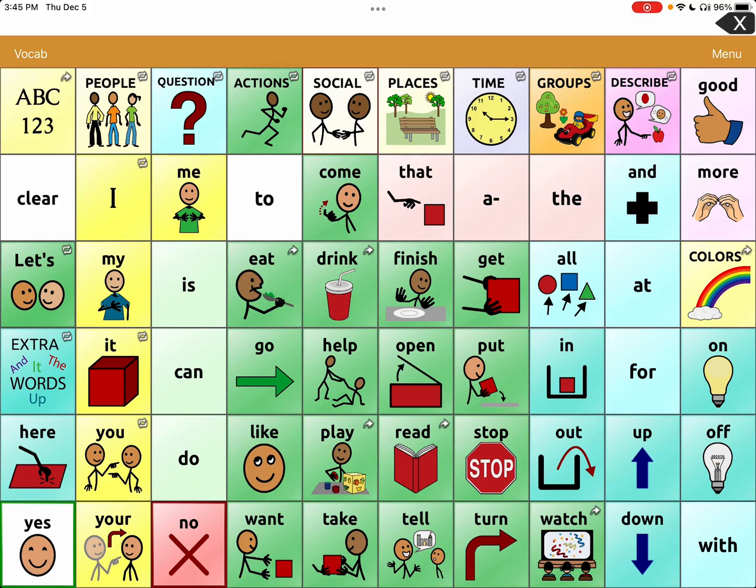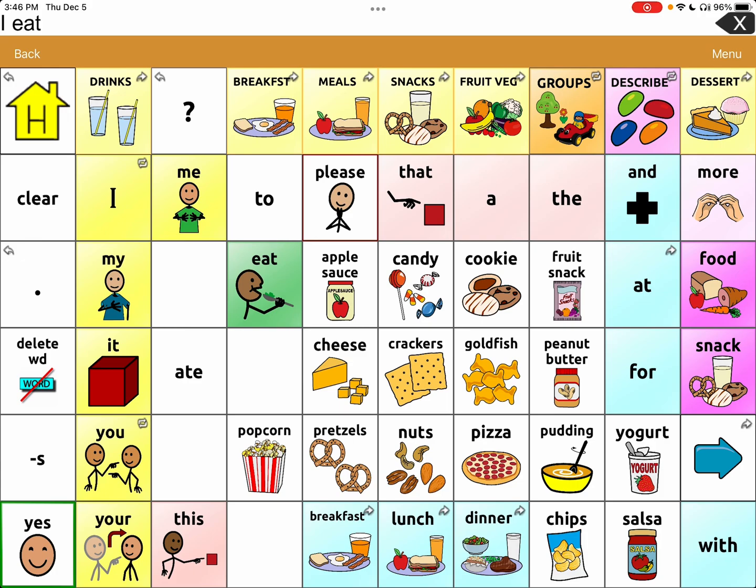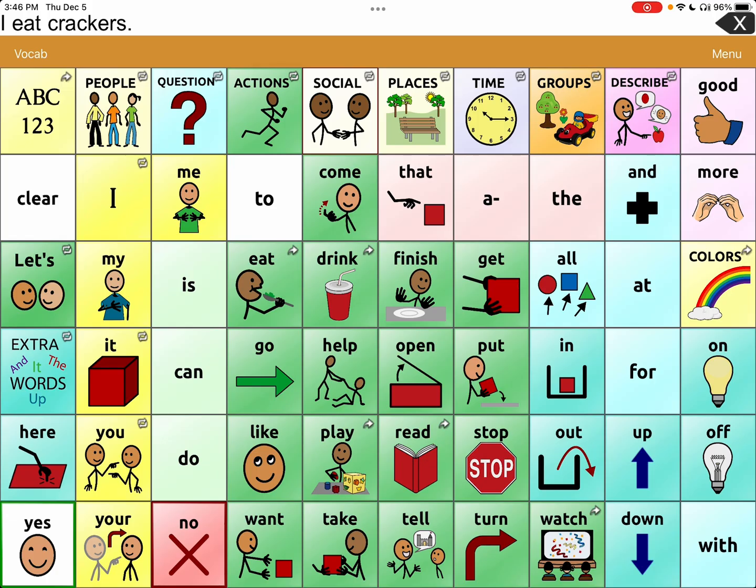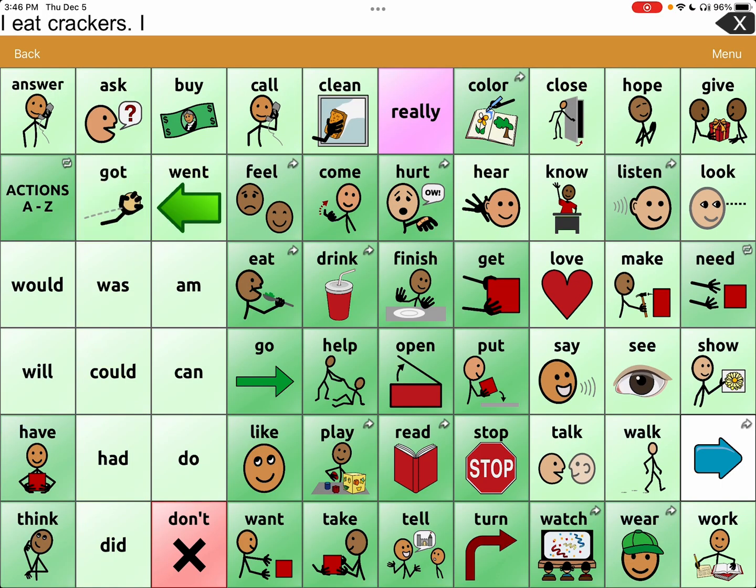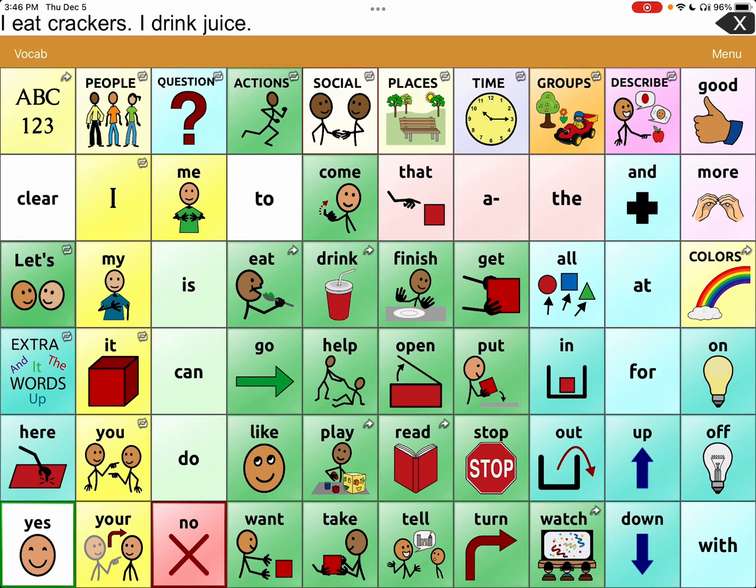I'm going to create a sentence. I'm going to show you how to edit using the scrolling arrow. So I eat crackers. I eat crackers. I drink juice. I drink juice. So right now it says, if you tap the sentence button, I eat crackers. I drink juice.